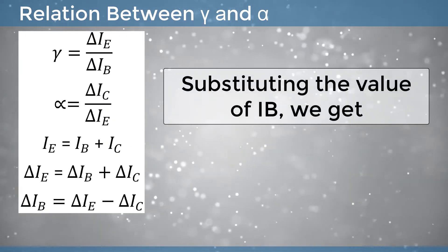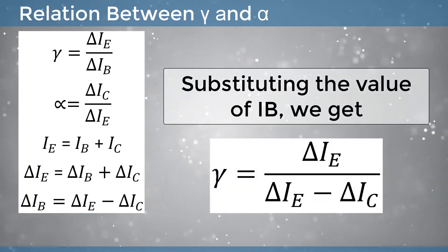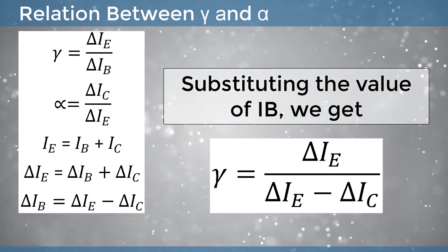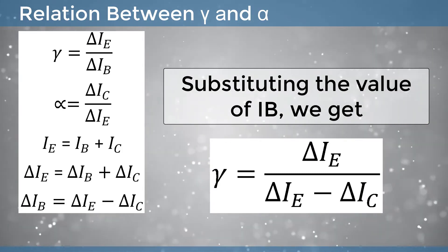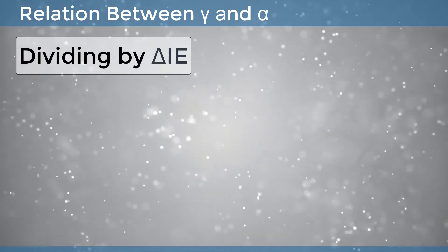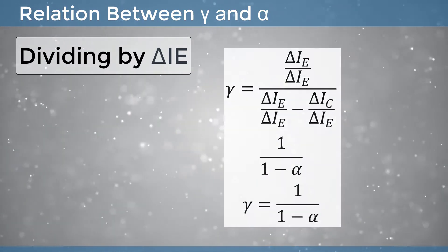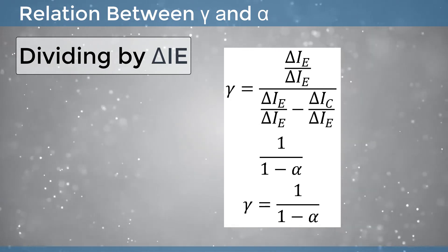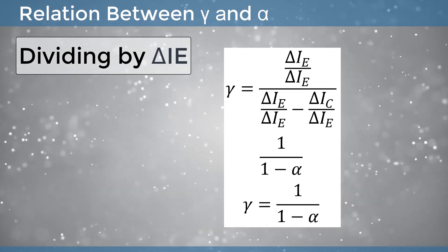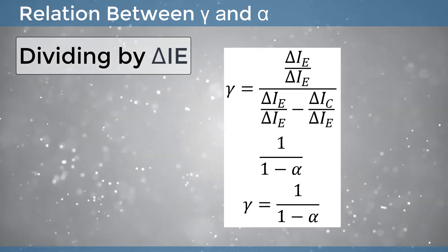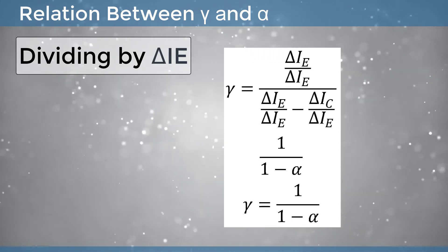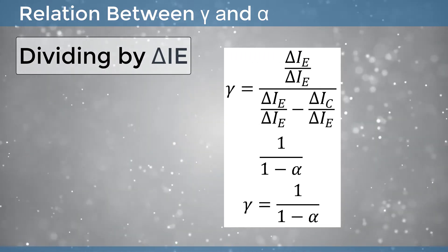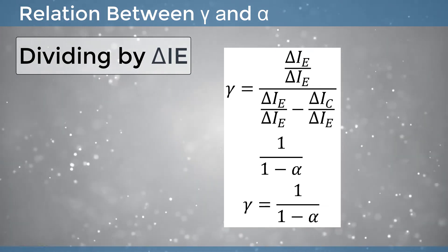Substituting the value of IB, gamma is equal to delta IE divided by delta IE minus delta IC. Dividing numerator and denominator by delta IE, gamma equals 1 divided by 1 minus alpha. Therefore, gamma is equal to 1 by 1 minus alpha.